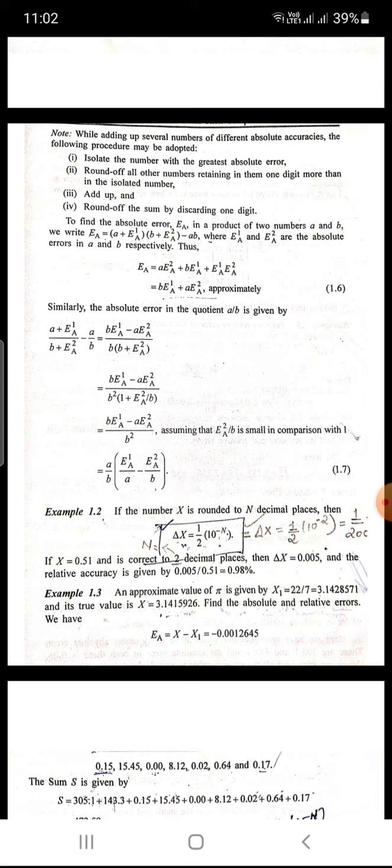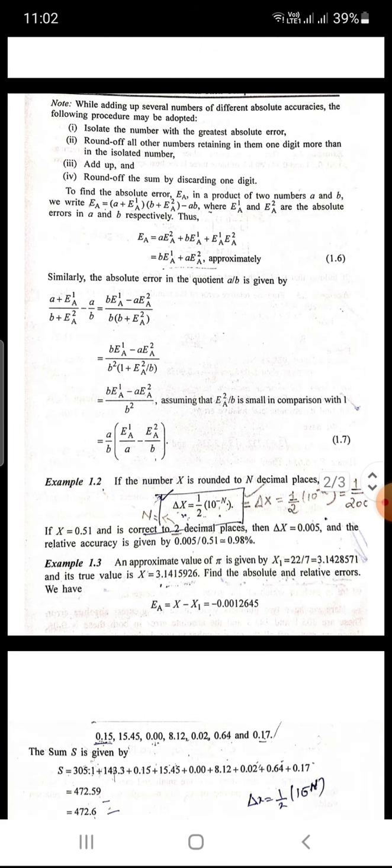To find the absolute error ea in a product of two numbers a and b, we write ea equals (a plus e1a) times (b plus e2a) minus ab, where e1a and e2a are the absolute errors in a and b respectively. Thus ea will equal b e2a plus a e1a plus e1a e2a.